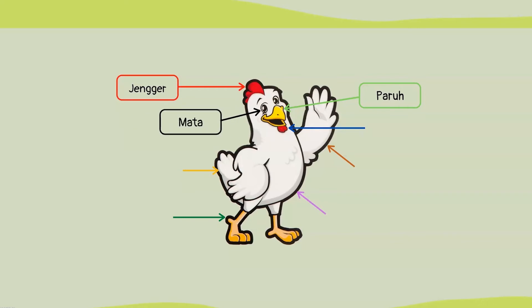Selanjutnya ada mata, di mana mata ini berfungsi sebagai indera penglihatan. Sama seperti mata manusia, mata yang terdapat pada tubuh ayam digunakan untuk melihat lingkungan sekelilingnya. Lalu ada leher ya adik-adik.